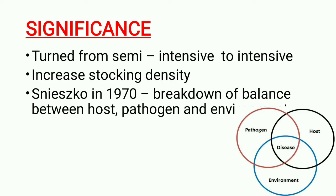First we will see what are the significance of fish disease in aquaculture. Diseases mainly occur because we need sustainable development in aquaculture — to increase productivity. Systems are increasing; we are going from semi-intensive culture to intensive culture. Intensive culture means we are increasing the stocking density more and more, while using less fertilizer.